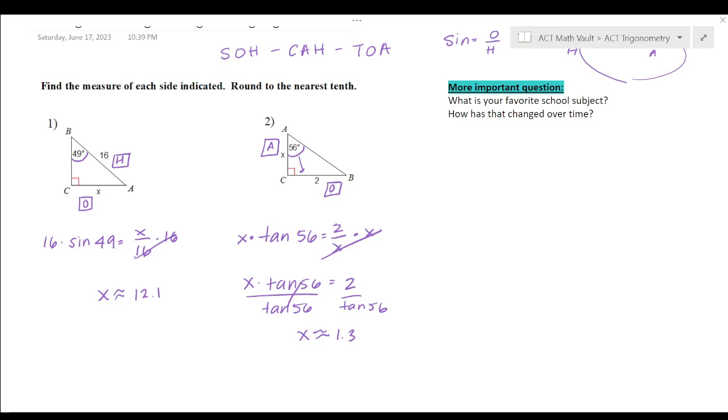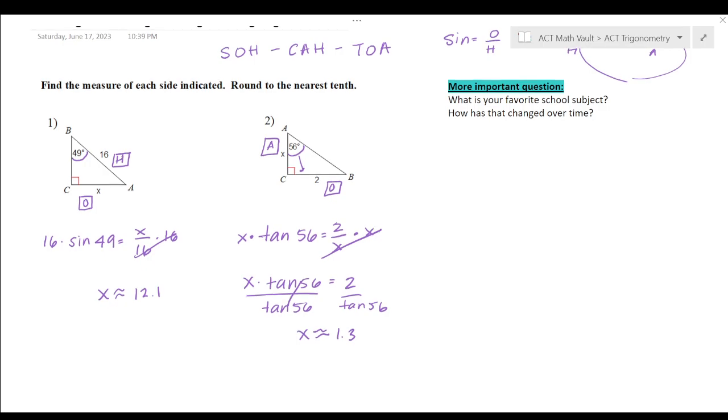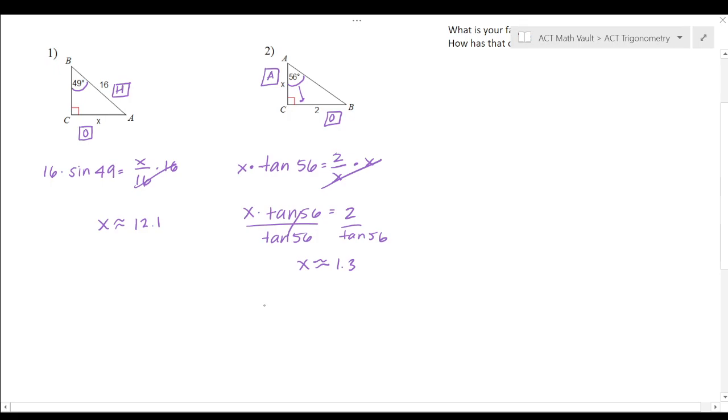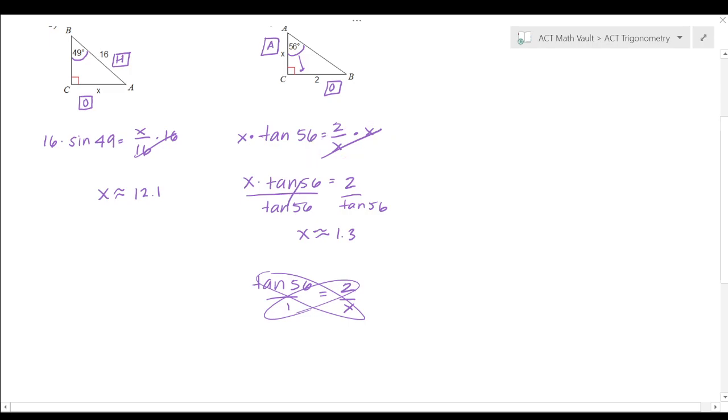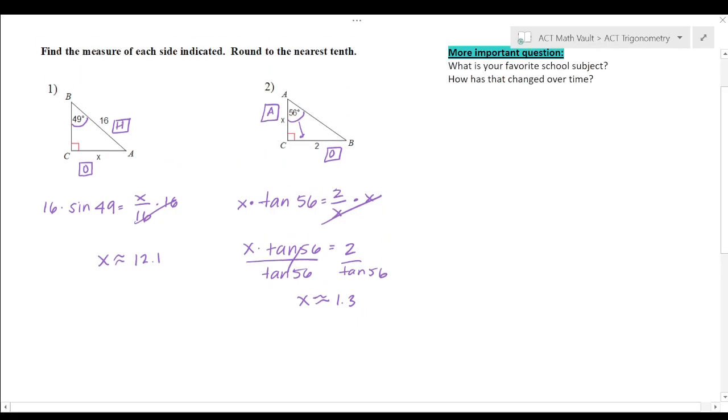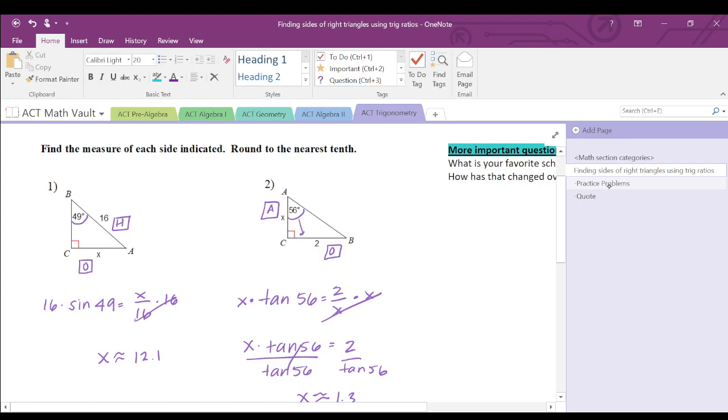So for this type of problem, you can also use that cross multiplication. I could have done tangent 56 over 1 equals 2 over X. I totally understand why people teach it this way, because then you just go 2 equals X times tangent 56. You don't really have to monkey around with this X, like moving it over and then trying to figure out how to get rid of it again. So keep in mind that cross multiplication is entirely useful for this if you like that method.